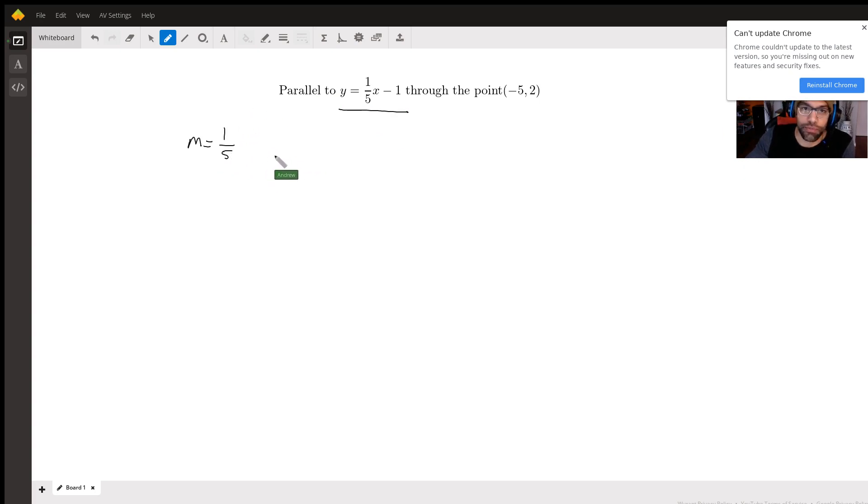And then the slope intercept form of any line is going to look like y equals mx plus b. Well, we already know m here, right? So we can write now that it's y equals one-fifth x plus b.